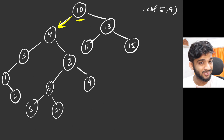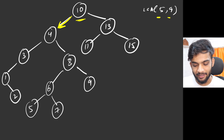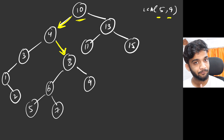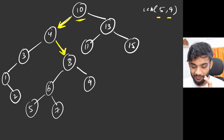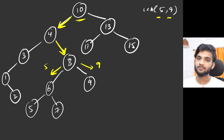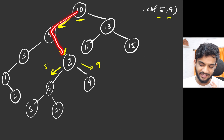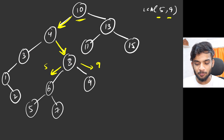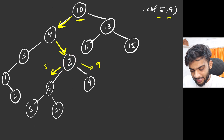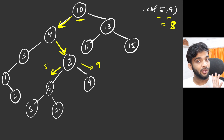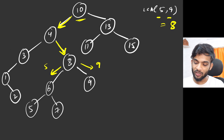Following this for LCA of 5 and 9: at node 10, both 5 and 9 are smaller, so move left. At node 4, both are greater, so move right. At node 8, I can say 5 is on the left and 9 is on the right — the path splits here. So node 8 is the last point of split, and that is the LCA.